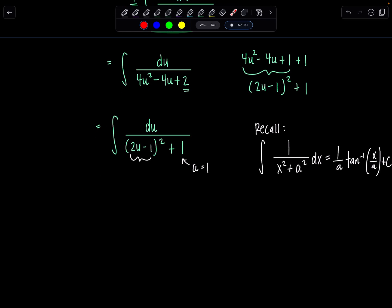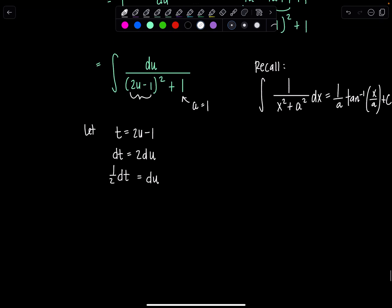So I'm going to let, let's let t equal 2u minus 1. Then dt is 2du. So 1 half dt is du. And then now, let's go back to the integral. Let me rewrite it in terms of t. So we have 1 half dt in the numerator instead of du, right? And then all of this loveliness, 2u minus 1, that's just t. So then I have t squared plus 1.